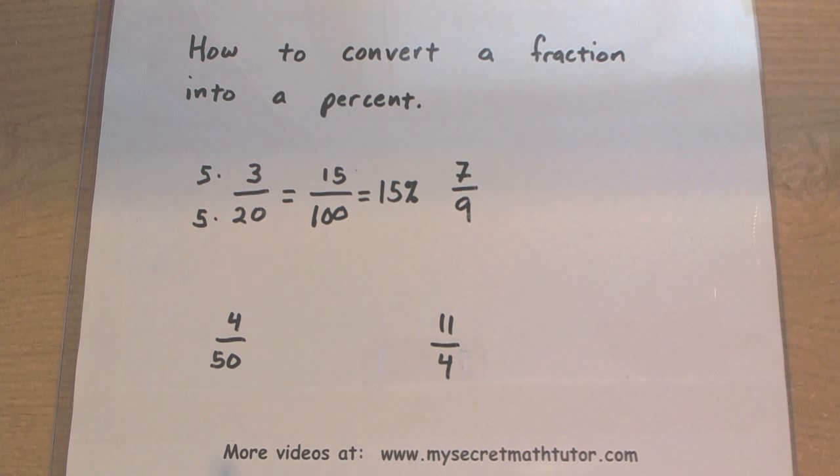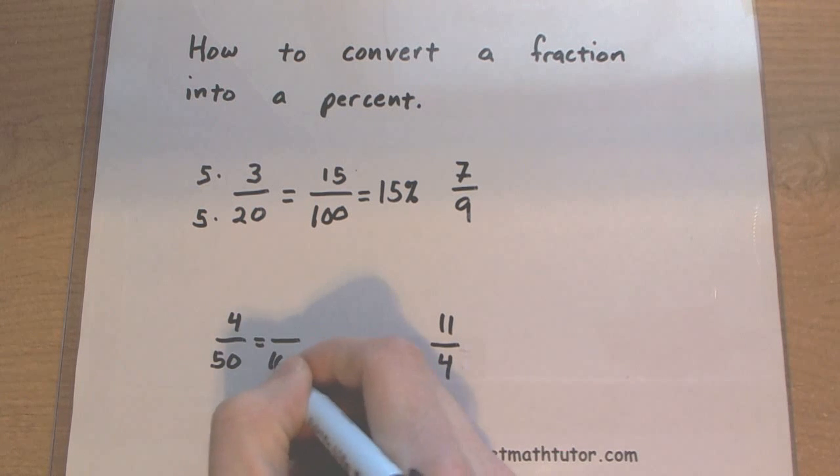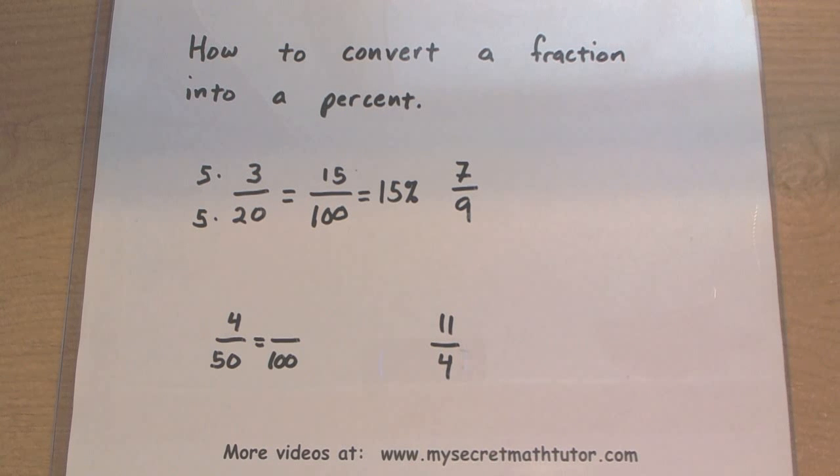Let's see this one more time. With this fraction I have 4 divided by 50. Again, think, how are you going to get 100 on the bottom? We'd have to double the 50 in order to get 100.